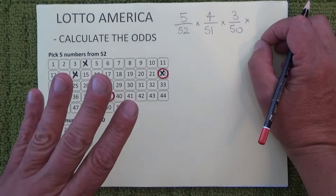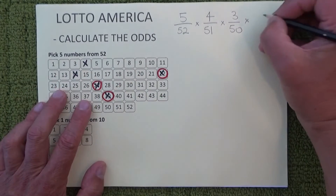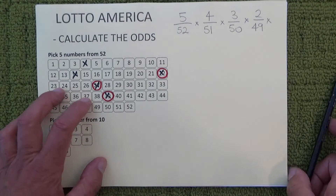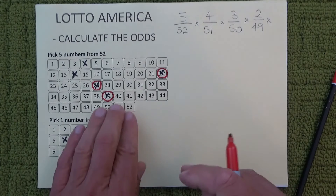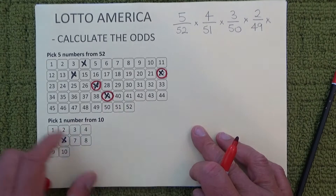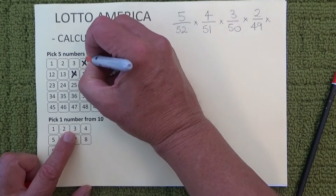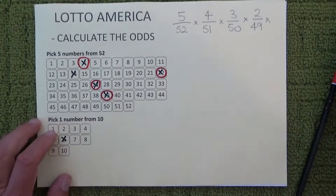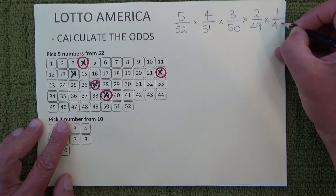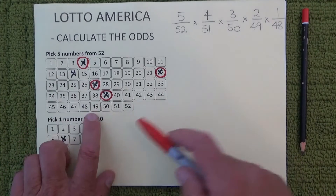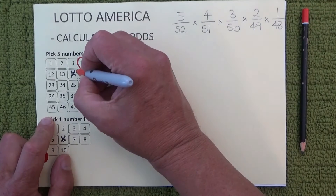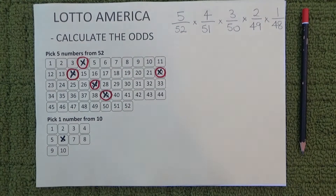When the fourth ball is drawn, you're left with two chances — two chances in 49 of matching the fourth ball that's drawn. There are two unmarked numbers on your coupon and three numbers have already come out of the barrel, so it's two in 49. And then when the last number's drawn, you're left with one chance — one chance in 48. You've got one unmarked number and 48 balls left in the barrel, so you've got one chance in 48 of matching the final number drawn.